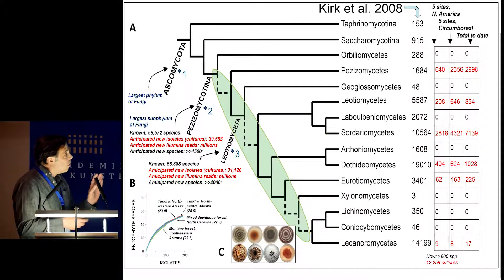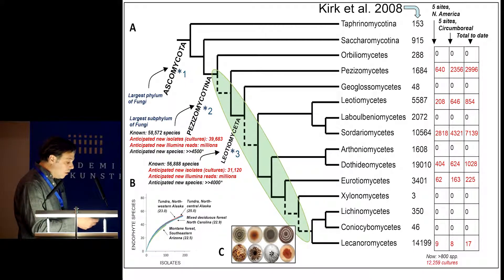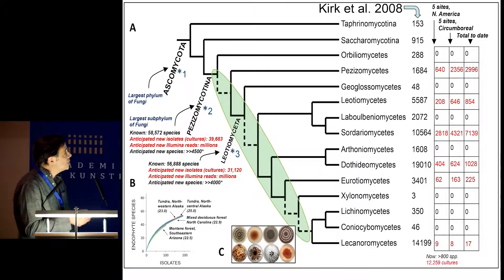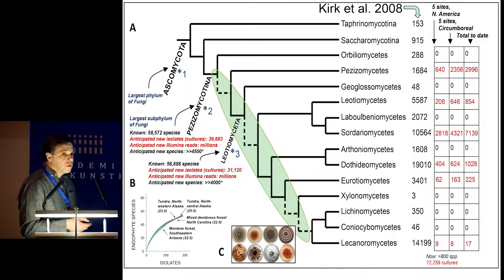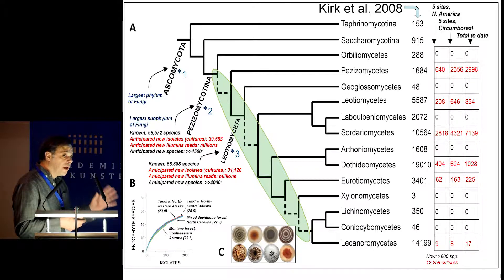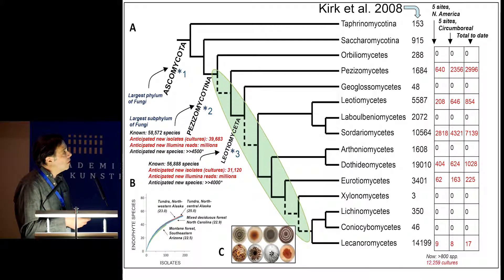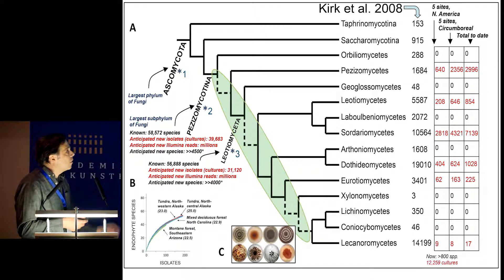Here is a summary of all the relationships among the known Pezizomycotina, with the number of species as reported in the Dictionary of the Fungi. The last column shows the number of strains the Arnold Lab has isolated from a total of 10 sites — more than 12,000 cultures. Five of these sites were in a circumboreal belt, mostly boreal biome, and five were from North America, ranging from boreal to temperate and subtropical.